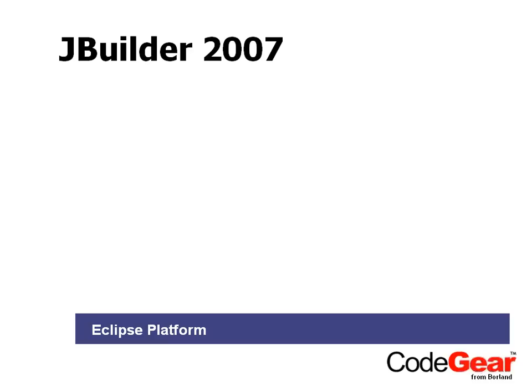How JBuilder really stacks up is that in the past we've had the Primetime platform as our underlying platform. Now in JBuilder we've taken out the Primetime platform and put in the Eclipse platform. This is the second platform shift — the first was in JBuilder 3.5 to 4.0, where we moved from the Delphi platform to the Primetime platform. This is the third shift, from Primetime to Eclipse.